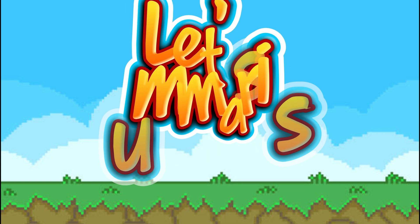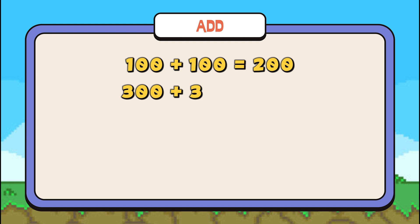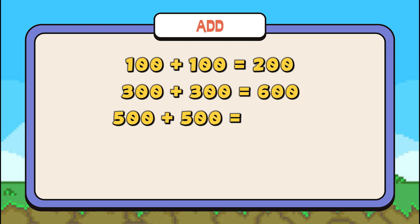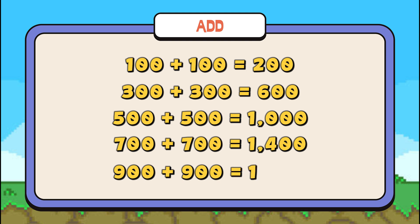Now, let's summarize! Let's add! 100 plus 100 is equals to 200! 300 plus 300 is equals to 600! 500 plus 500 is equals to 1,000! 700 plus 700 is equals to 1,400! 900 plus 900 is equals to 1,800!